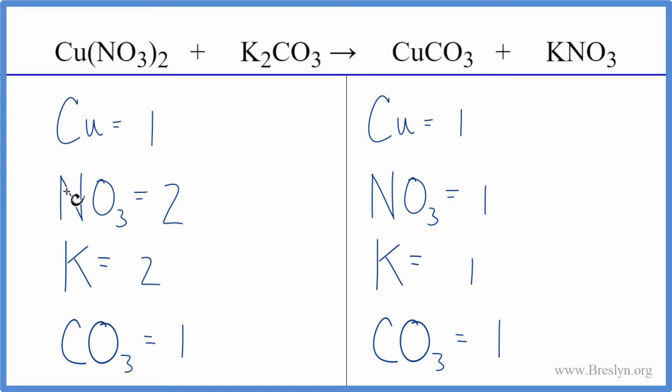Let's go ahead and balance the nitrates first. If we put a two in front of the KNO3, we have one nitrate times the two, so that balances the nitrates, and we have one potassium times the two. That balances the potassium, and that's it. This equation, it's balanced.